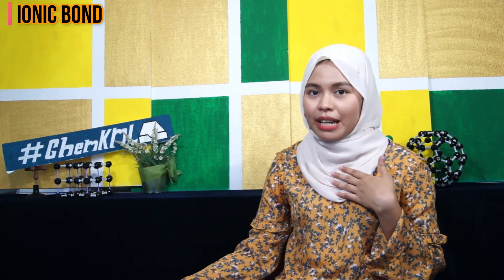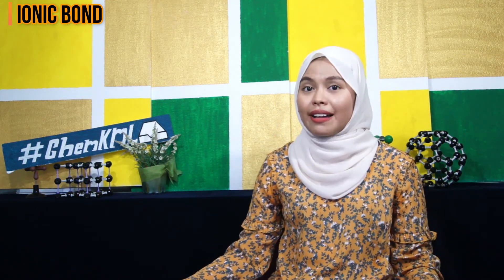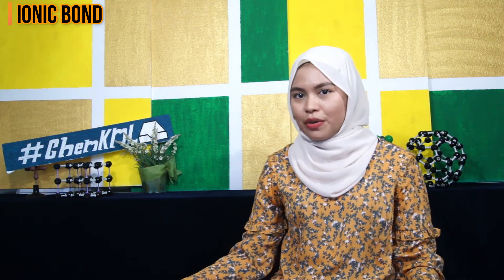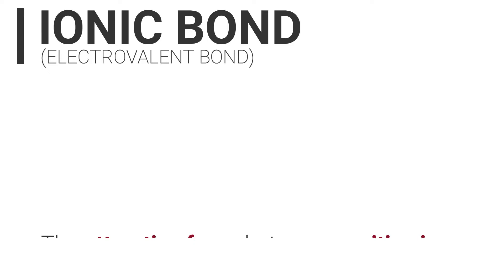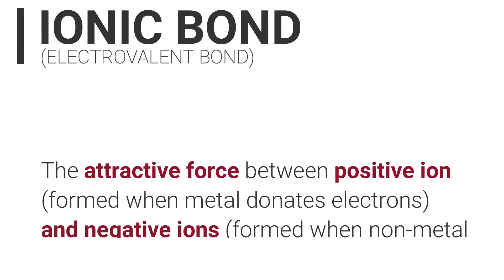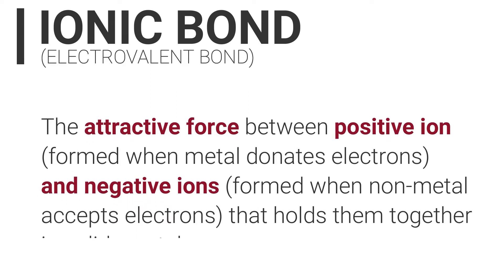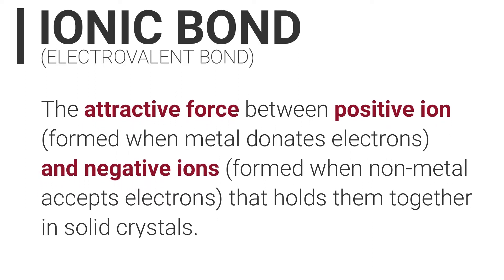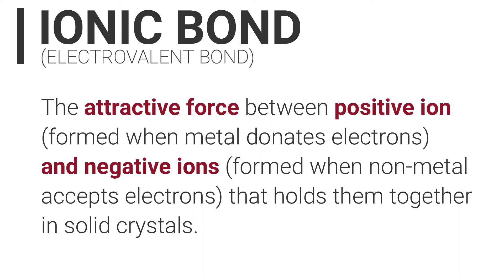Now I would like to go through the first type of chemical bond, known as ionic bond, or electrovalent bond. What is ionic bond? Ionic bond is the attractive force between a positive ion, which is formed when a metal donates electrons, and a negative ion, which is formed when a non-metal accepts electrons, that holds them together in solid crystals.